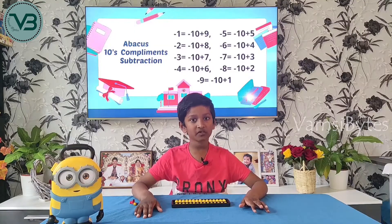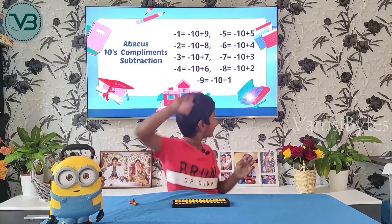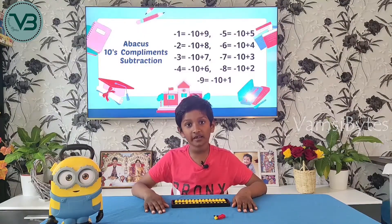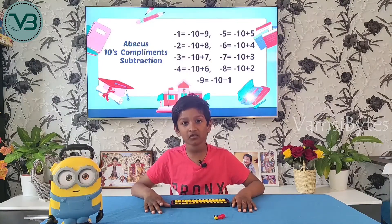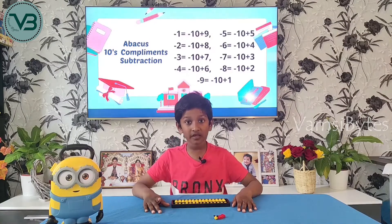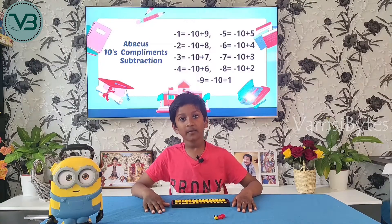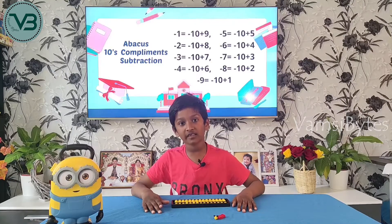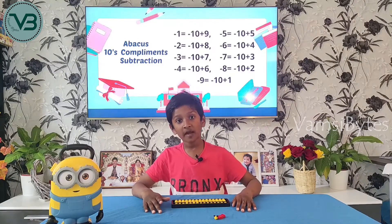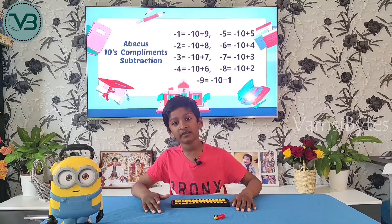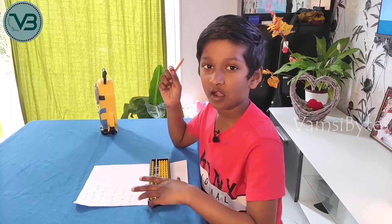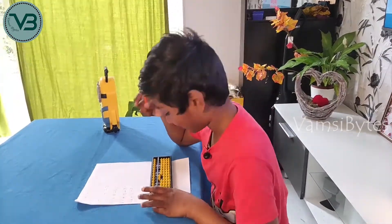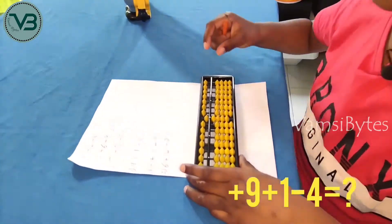Now let me show 10 complements for subtraction. This also starts with minus. Minus 1 is equal to minus 10 plus 9. Minus 2 is equal to minus 10 plus 8. Minus 3 is equal to minus 10 plus 7. Minus 4 is equal to minus 10 plus 6. Minus 5 is equal to minus 10 plus 5. Minus 6 is equal to minus 10 plus 4. Minus 7 is equal to minus 10 plus 3. Minus 8 is equal to minus 10 plus 2.